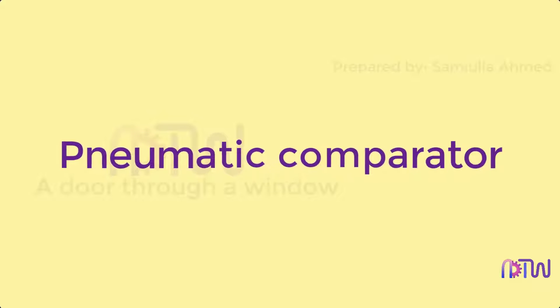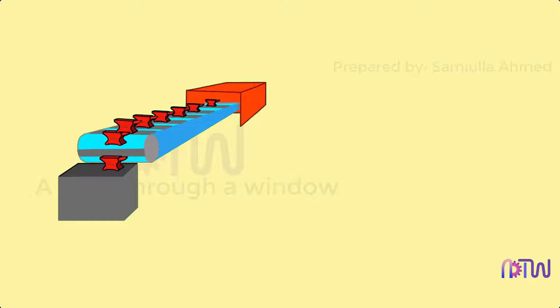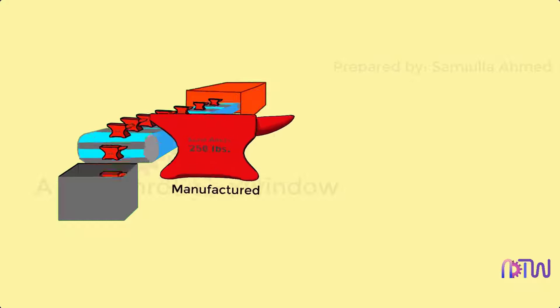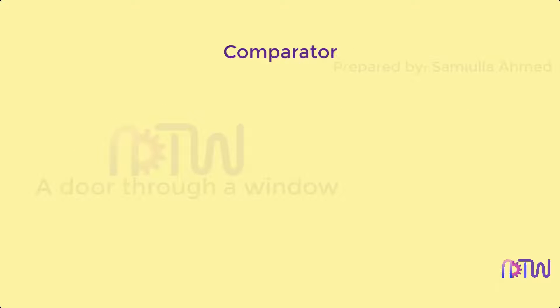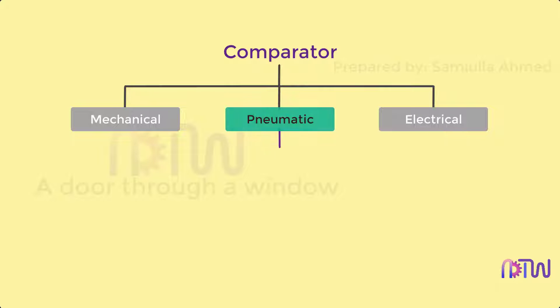Pneumatic comparator. Have you ever wondered how parts being manufactured are checked to see whether they meet the actual standard specifications? Today in this video we will see how this is done. This is done by using an instrument called a comparator. There are many types of comparators available. In this video we will learn about a pneumatic comparator.